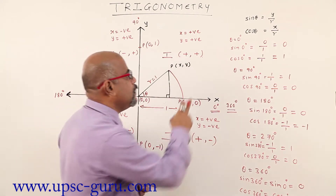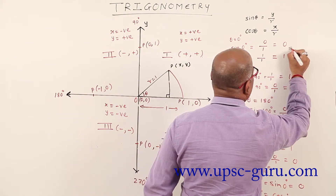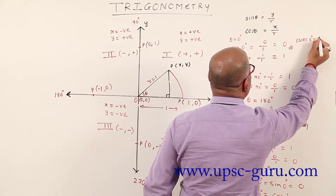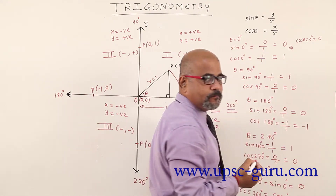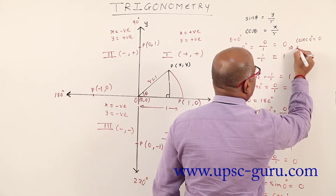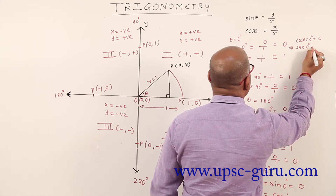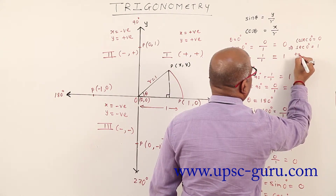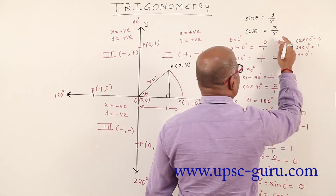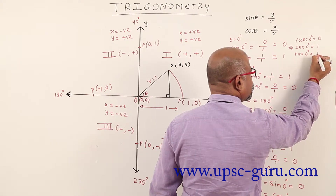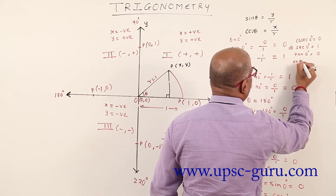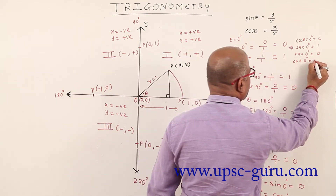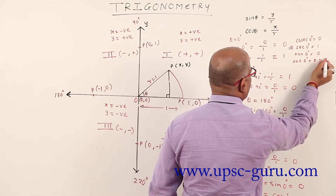Now, when sin is 0, cosec 0 degree: reciprocal of 0, which is 1 upon 0 — does not exist. Sec 0 degree: reciprocal of cos, which is 1. Tan 0 degree: sin upon cos, 0 upon 1 is 0. Cot 0 degree: cos upon sin, 1 upon 0 — does not exist.